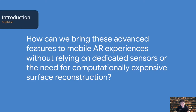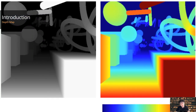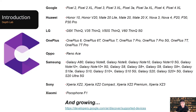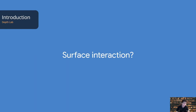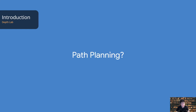Next, we wonder how we can bring these advanced features to mobile AR experiences. With Google's ARCore Depth API available on millions of Android devices, we wonder: is there more to realize than occlusion? What about surface interaction, realistic physics, and path planning? We are used to these concepts in typical 3D games — why not in AR on our phones as well?